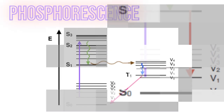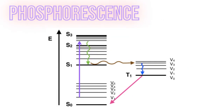Phosphorescence, on the other hand, is a slow and direct radiative transition from an excited triplet state to a singlet ground state. This transition occurs over a longer timescale compared to fluorescence.